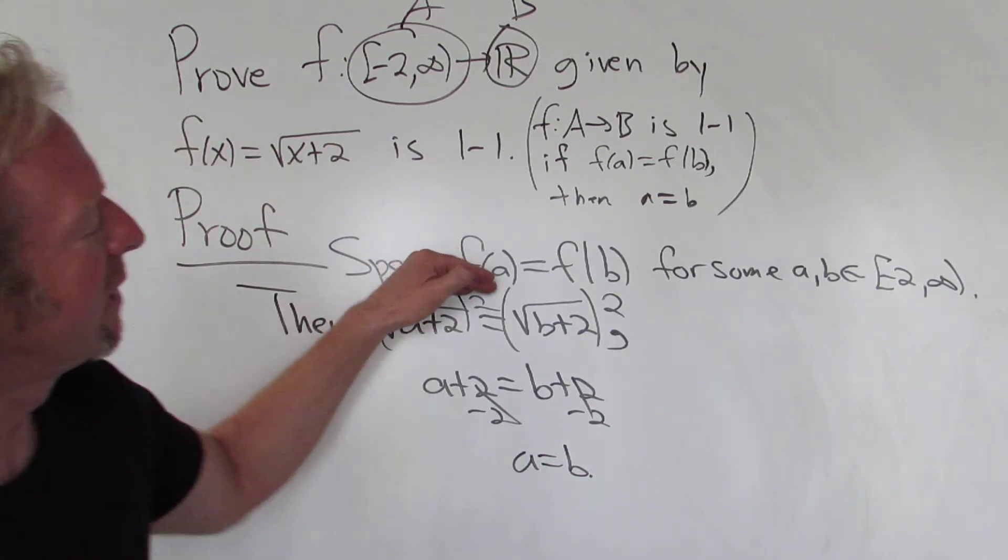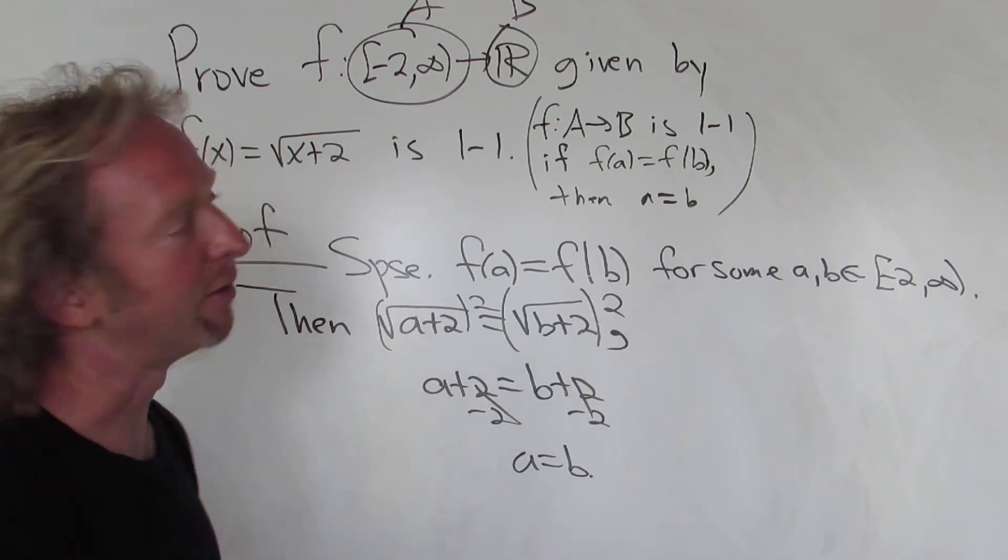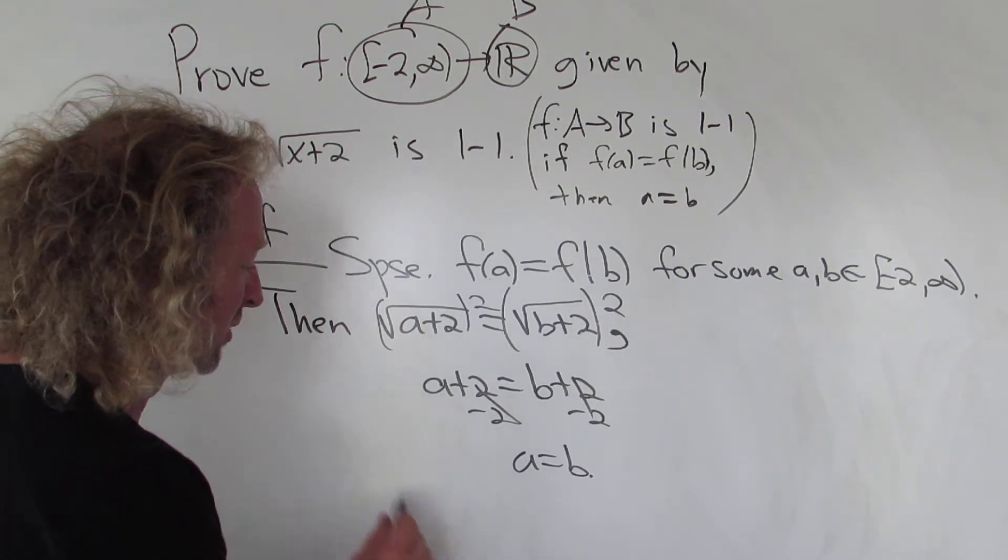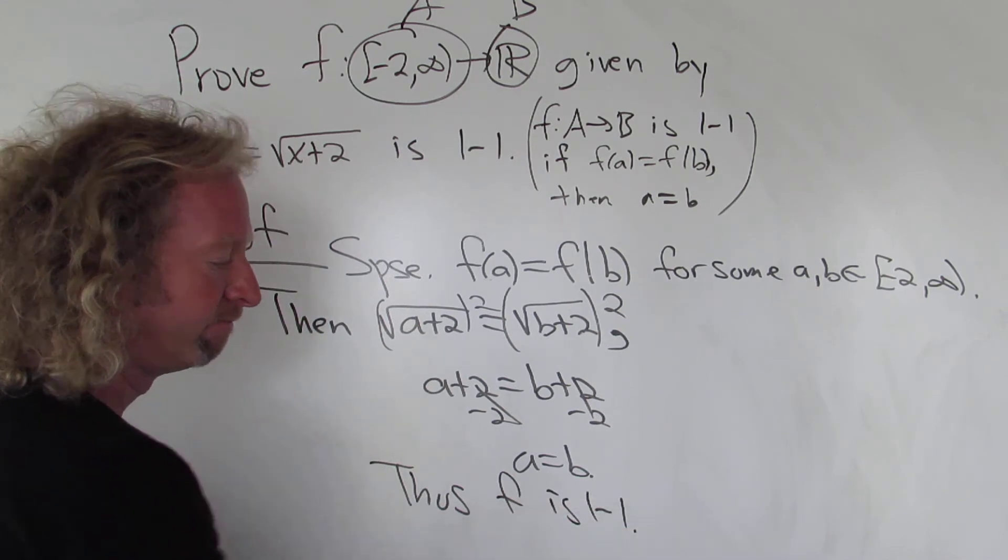So we start by assuming f(a) is equal to f(b), and then we show a is equal to b. That satisfies the definition of what it means for a function to be one-to-one. So thus f is one-to-one. That's it.